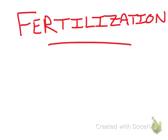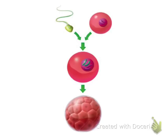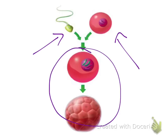Today we're going to talk about fertilization. Sexual reproduction happens in animals when a sperm cell, the male sex cell, comes into contact with the female sex cell, the egg, and a fertilized egg starts to grow into a new offspring.